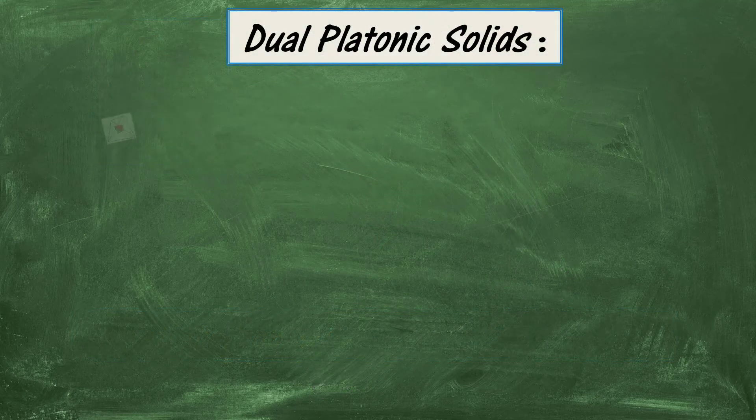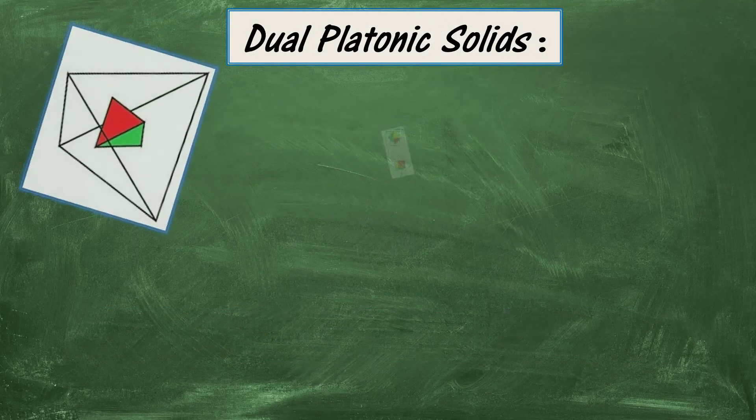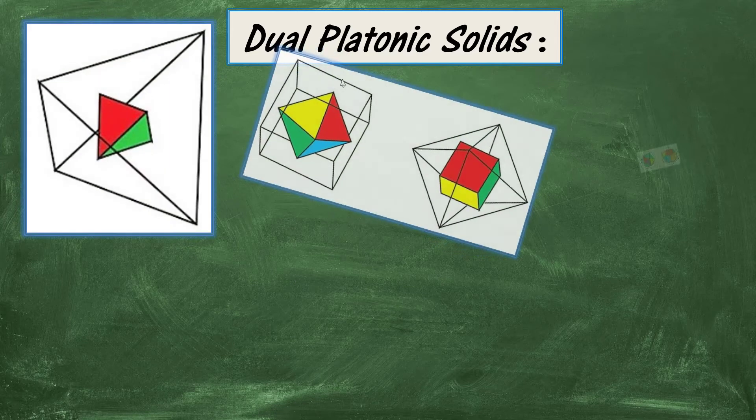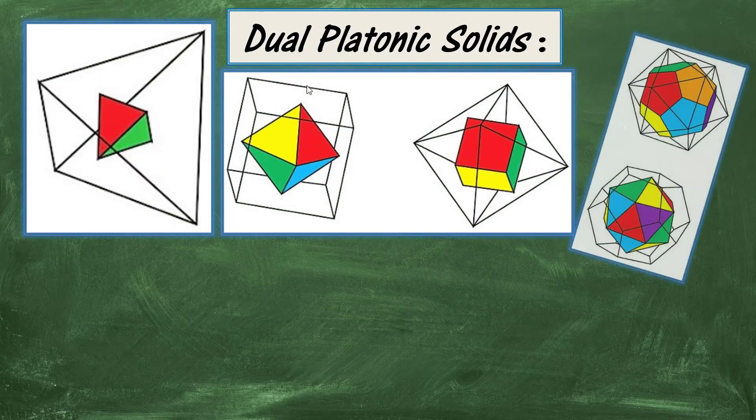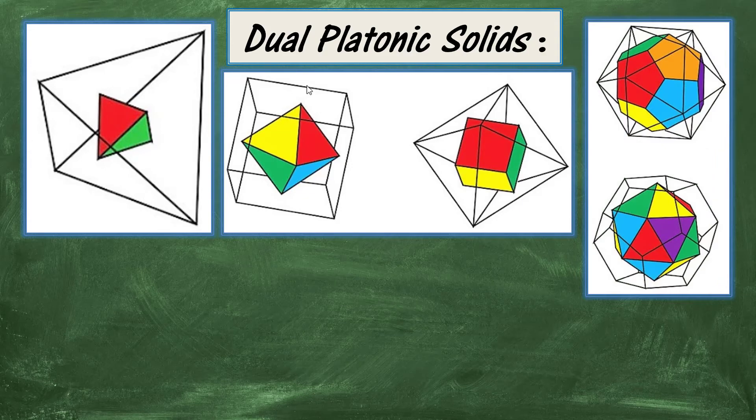In summary, we have the tetrahedron, a dual of itself, the cube and the octahedron, and the icosahedron and the dodecahedron.